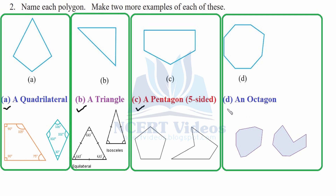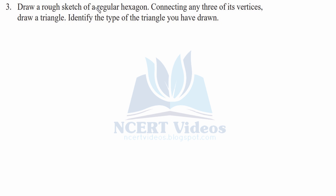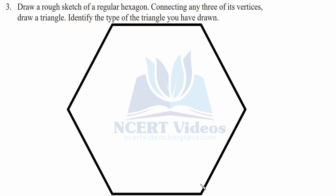Question three: draw a rough sketch of a regular hexagon; connecting any three of its vertices, draw a triangle and identify the type of triangle formed. This is a regular hexagon having equal sides and equal angle measures. We connect three vertices — for example, taking vertices one, two, and three — and connect them to form a triangle.